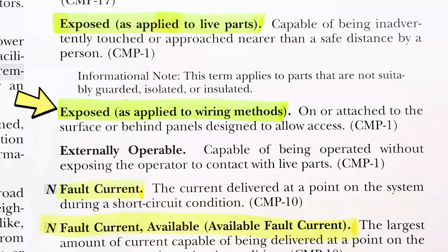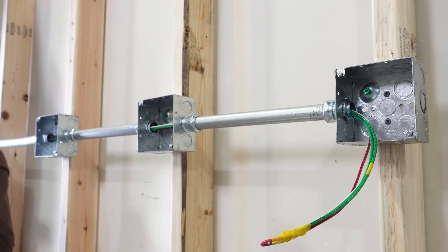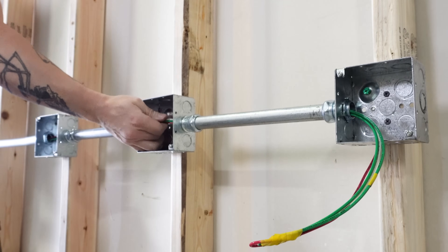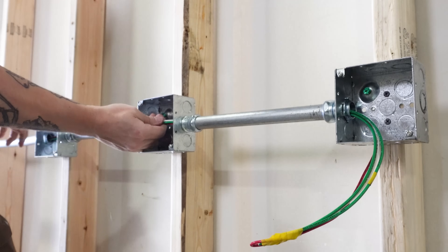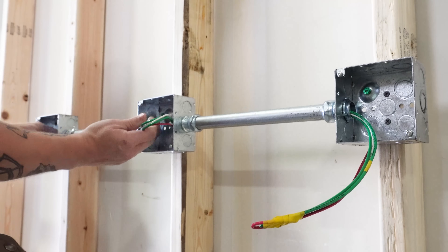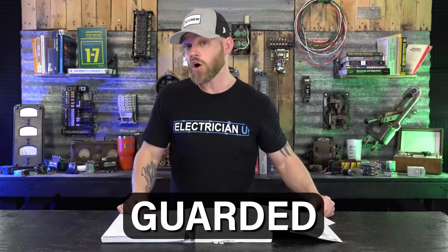Then we have 'exposed' a second time, but this one is applied to wiring methods. Here, exposed means on or attached to the surface, or behind panels designed to allow access. So if you run EMT on the outside of a wall, that work is considered exposed work.